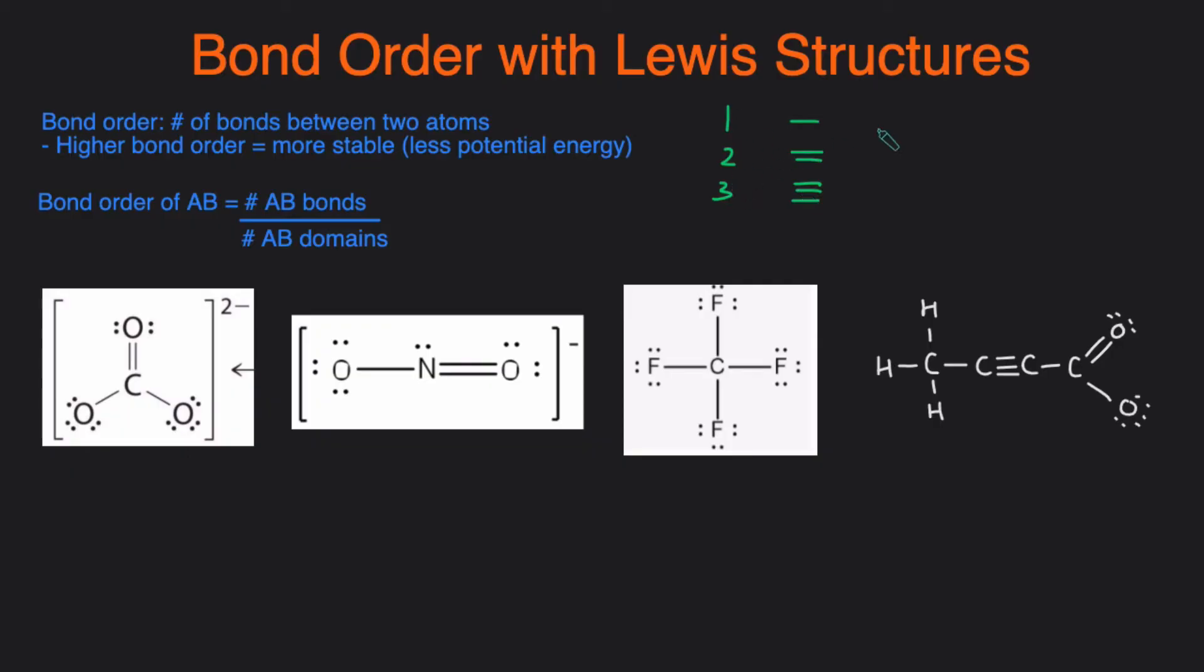But you can also have bond orders that aren't whole numbers. For example, if you had a bond order of 1.33, then that means there's one and one third of the bond that exists between atoms. And you can have partial bonds when you're dealing with resonance, which we'll see with some of these examples.